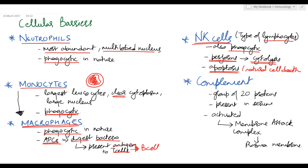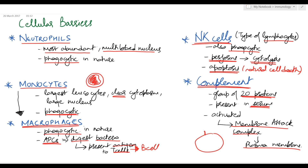NK cells also cause apoptosis — that is, natural cell death — which is why they are known as natural killer cells. Complements are a group of 20 proteins present in the serum. Once activated, they form the membrane attack complex, which attacks the plasma membrane of the pathogen, breaks the cell wall, and causes cell death through osmosis.